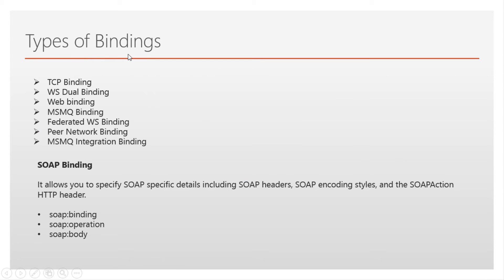Types of bindings include: TCP binding, WS dual binding, web binding, MSMQ binding, federated WS binding, peer network binding, MSMQ integrated binding, net TCP binding, and others. SOAP binding allows us to specify SOAP-specific details like SOAP header, SOAP encoding styles, and SOAP action — including tags such as SOAP binding, SOAP operation, and SOAP body.